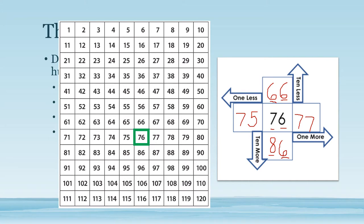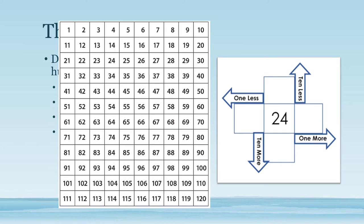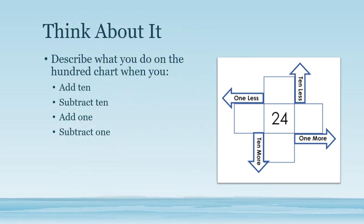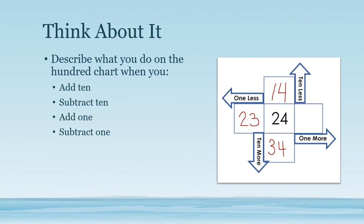Let's try again, this time with the number 24. Let's try to do it mentally. You may still use a 100 chart if you want to, but try to remember the patterns. What is 10 less than 24? If you said 14, you're correct. What about 10 more than 24? That's right, it's 34. What is one less than 24? That would be 23. And finally, one more than 24 is 25.